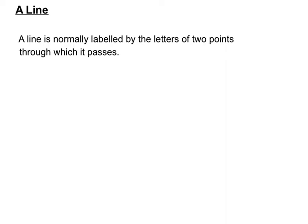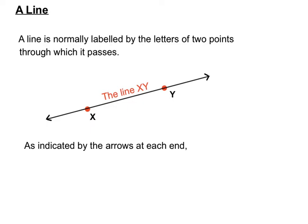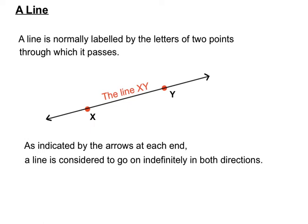A line is normally labelled by two letters of the points through which it passes. So you've got the point X and the point Y there. If a line passes through X and Y, we can label it the line XY. You'll notice arrows at each end of the line, indicating that a line in geometry is actually considered to go on indefinitely in both directions.